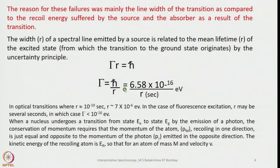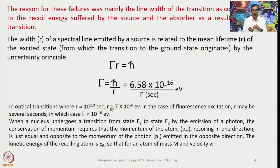That means Γ equals 6.58 × 10⁻¹⁶ divided by τ (τ in seconds, Γ in electron volts). In optical transitions where τ equals 10⁻¹⁰ seconds, Γ is approximately equal to 7 × 10⁻¹⁶ electron volts.